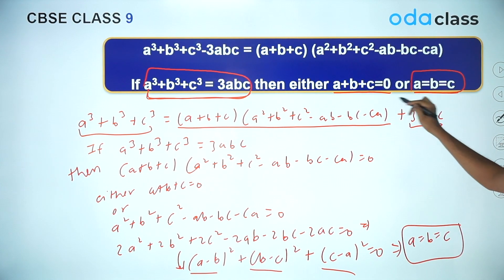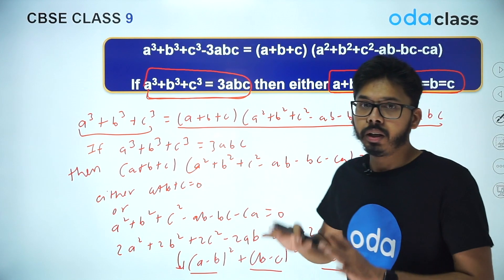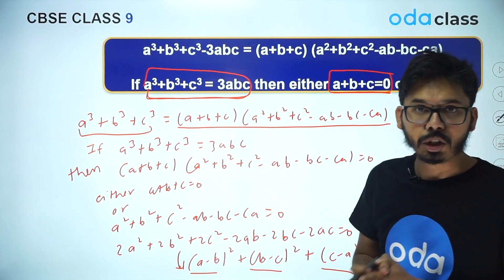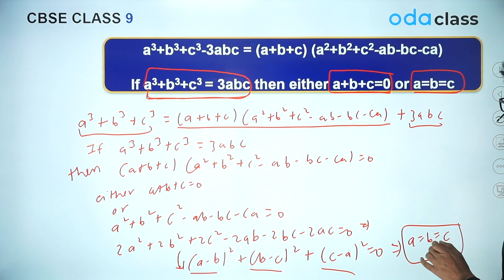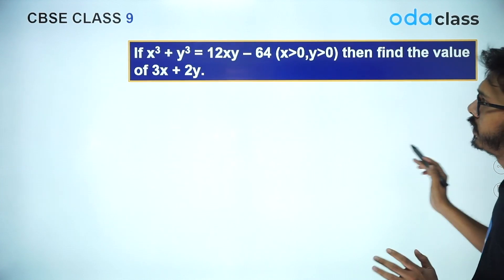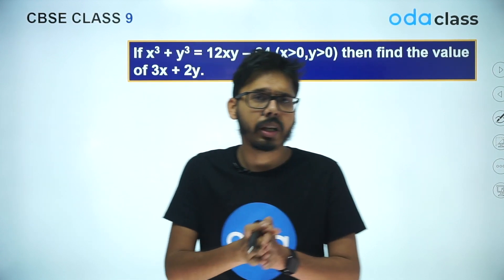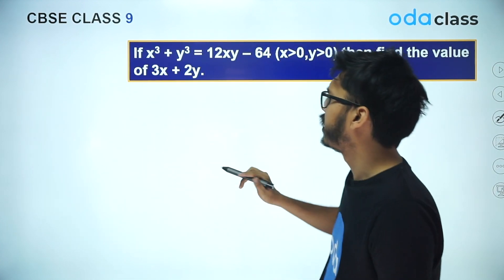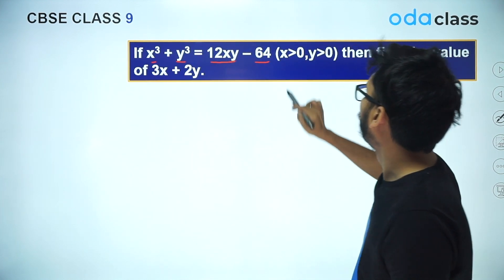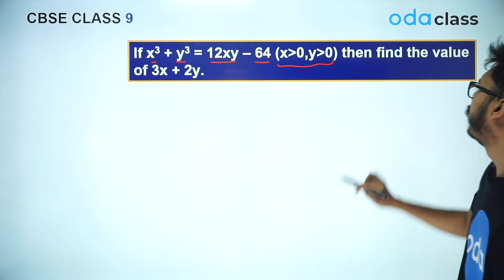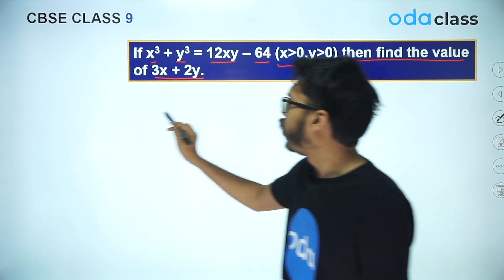So this is the second result. Either a + b + c = 0 or a = b = c. Knowing this result, I have two questions based on these two identities. Let's see the first question — it's a standard question you'll find in 9th standard and also in competitive exams. The question says: if x³ + y³ = 12xy − 64, where x > 0 and y > 0, find the value of 3x + 2y.